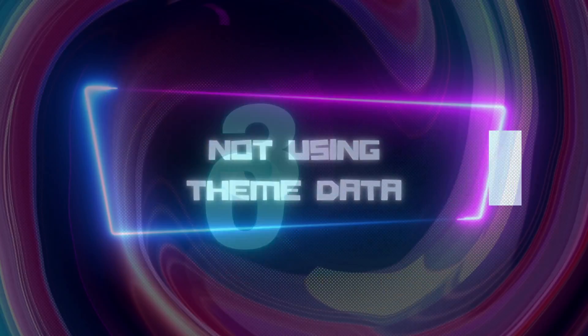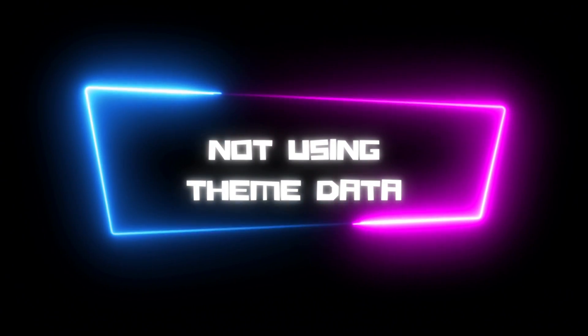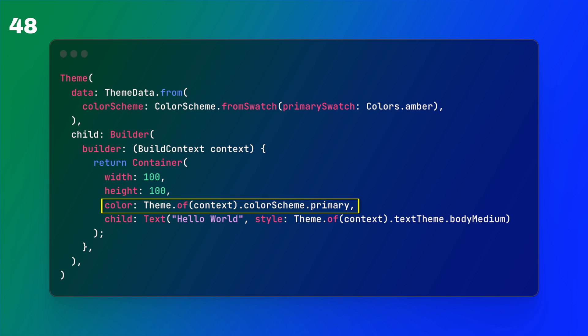The third mistake I made — that I spent a lot of time correcting — was not using ThemeData. Flutter has built-in ThemeData where you can set colors, text styles, and different theme aspects of your app. This really comes in handy if you want to do dark mode and light mode, since you can set all the colors through the ThemeData.